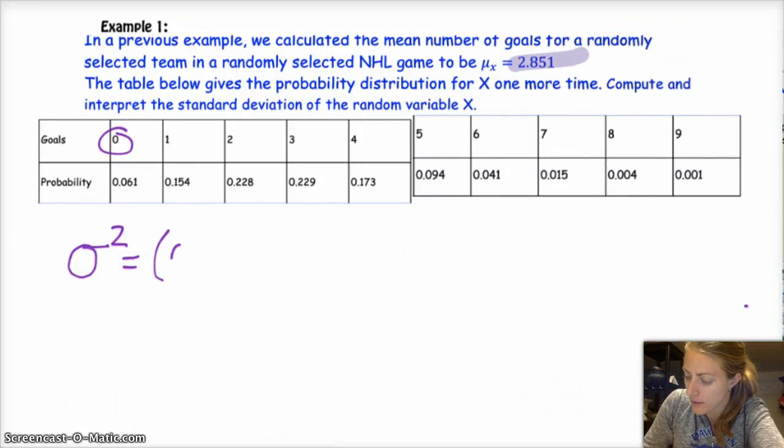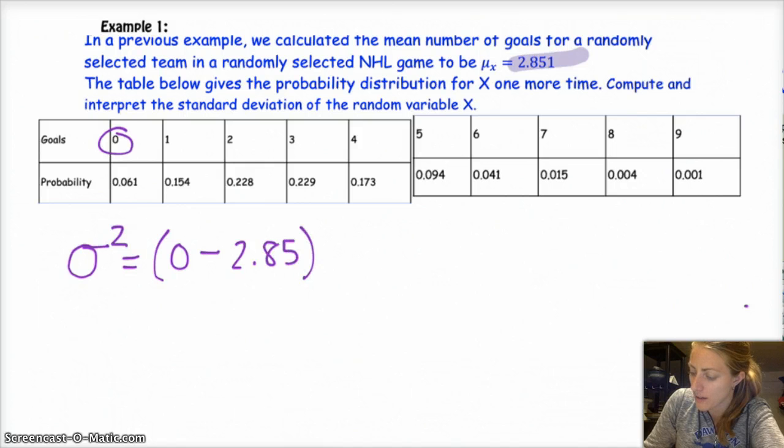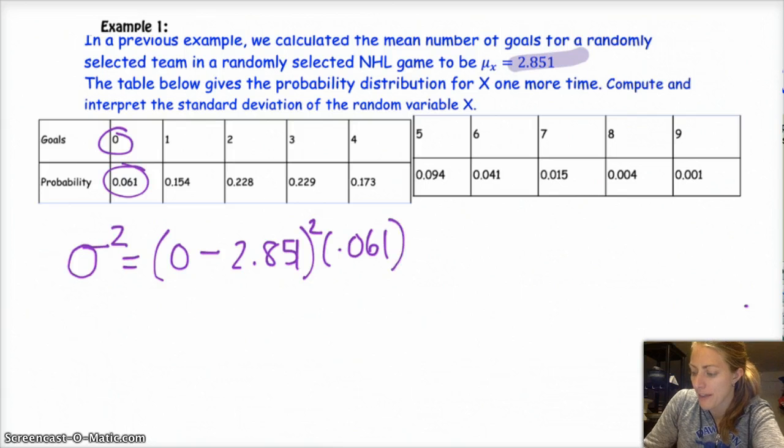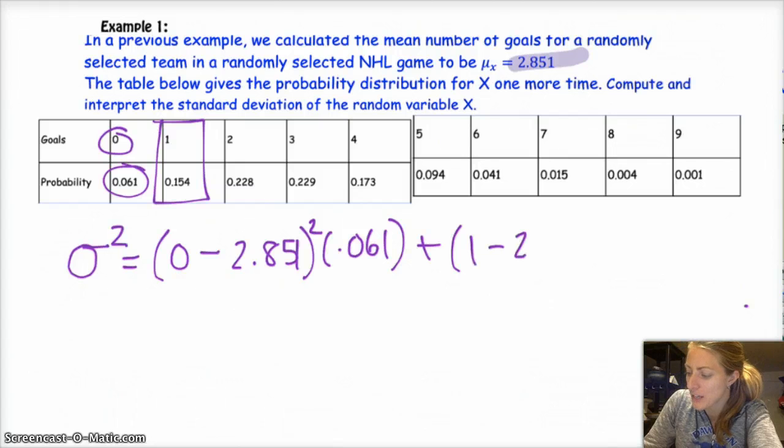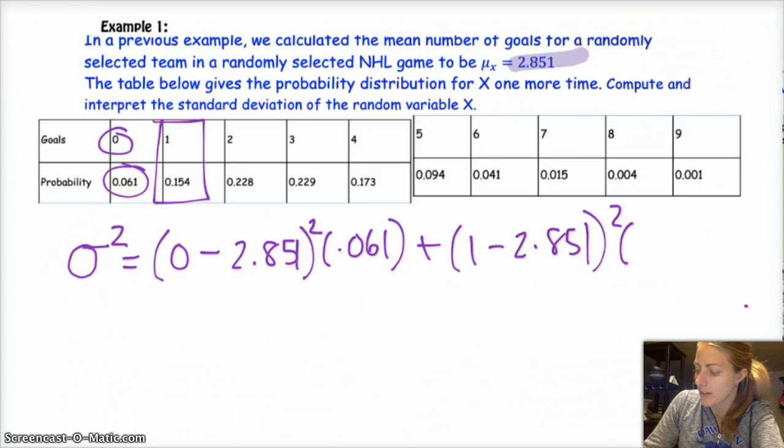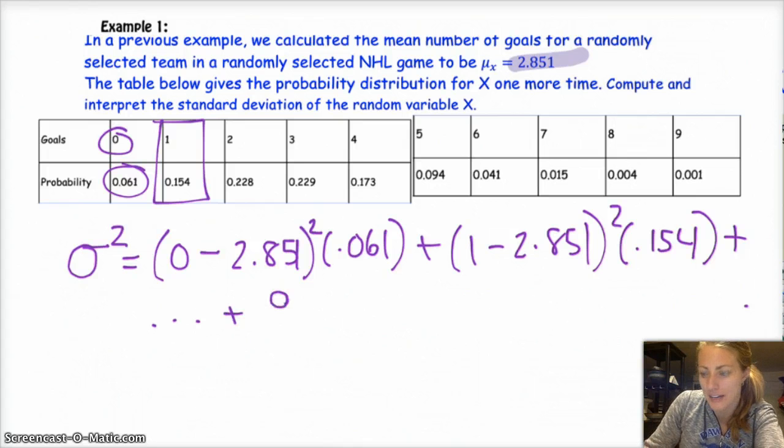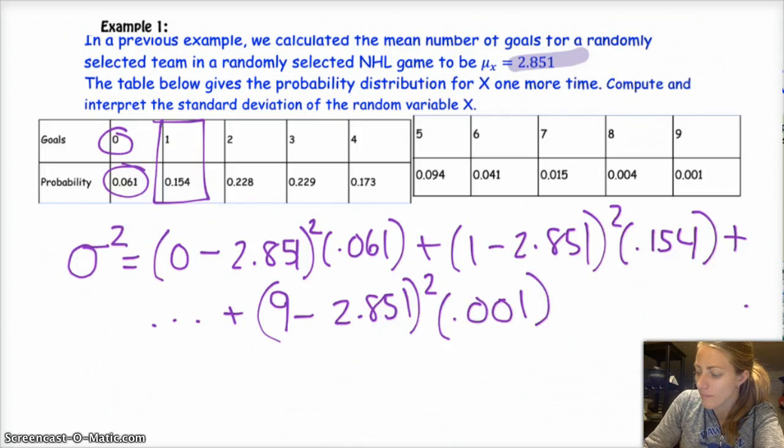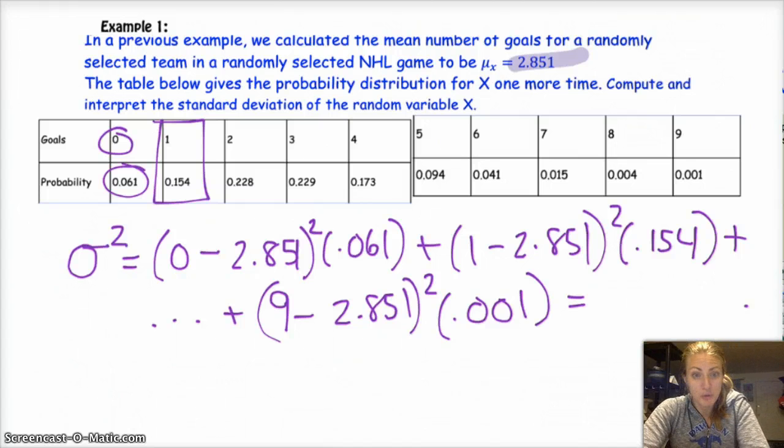So my x value is 0 minus my mean 2.851 squared, and then times the probability of that event occurring, so that's 0.061. And then we add that to the next one, which is my number next, getting one goal. So we get 1 minus 2.851 squared times the probability of that happening, 0.154, plus dot dot dot. And then we do this for every single term. Last one is 9 minus the mean 2.851 squared times the probability of it happening, 0.001, and then we just go through and calculate that. I will leave that up to you to calculate. Good luck, have fun.